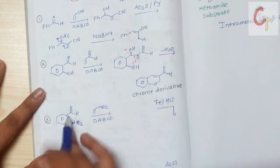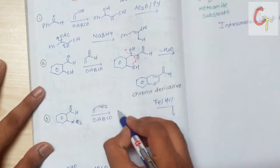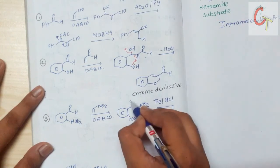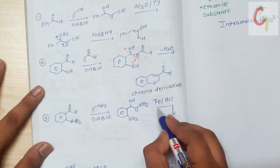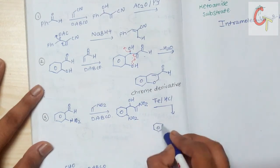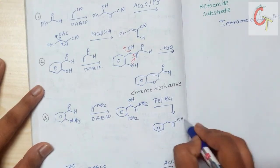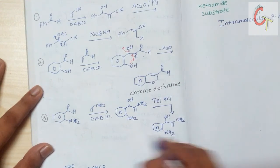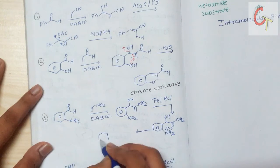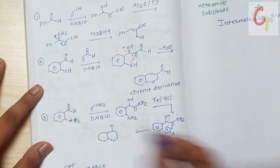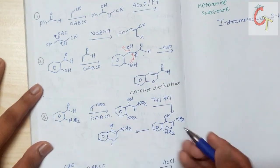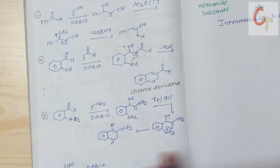Now let's look at another example. Here, benzaldehyde with a nitro group at the ortho position undergoes the Baylis-Hillman reaction in the first step to give the nitro product. If we carry out reduction using iron (Fe) in the presence of AcOH, it will reduce the NO2 group to an NH2 group. In the next step, by the donation of the nitrogen lone pair with intramolecular cyclization, we get a substituted indole.